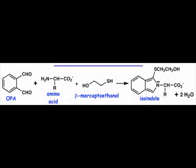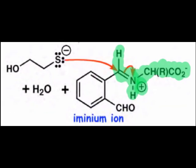After proton transfer and beta elimination of hydroxide, we arrive at the first intermediate drawn on this slide, the iminium ion.